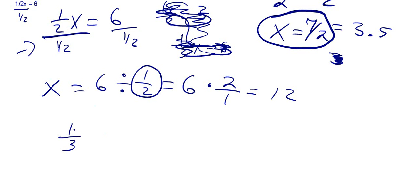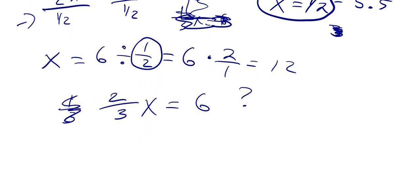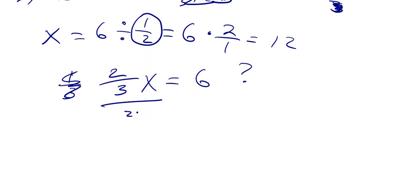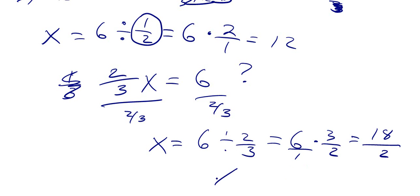let's make this 2 thirds x is equal to 6. What if we had this? We're going to do the same thing, divide both sides by 2 thirds. So we've got x, because 2 thirds divided by 2 thirds is just 1. Then you do 6 divided by 2 thirds, then multiply by the reciprocal, which is 3 halves. Sometimes people like to put a 1 here, it's okay. So you've got 6 times 3, which is 18, divided by 2, so in this case x is equal to 9.